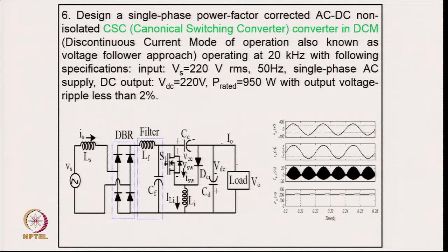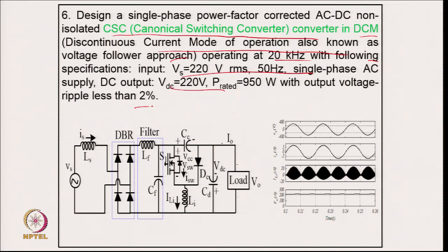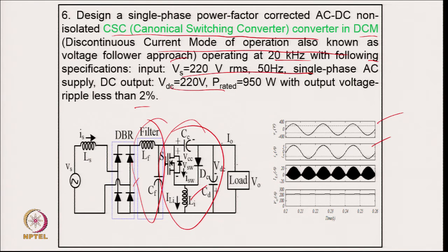Example 6: design a single phase power factor corrected AC-DC non-isolated canonical switching converter (also known as the Cuk converter) operating in discontinuous current mode with voltage follower control at 20 kHz. Specifications: 220 V, 50 Hz single phase AC supply, output 220 V, power 950 W, output voltage ripple 2 percent. After designing and simulating, the supply current is in phase with voltage, quite clean, THD well below 5 percent, and the output voltage is well regulated with 2 percent ripple.